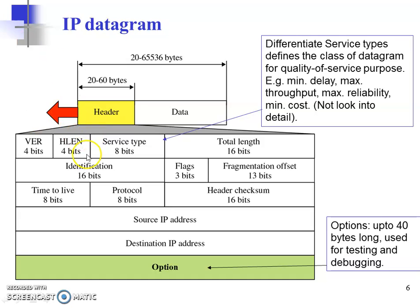The header length field consists of 4 bits. The minimum number it can have is 5 and the maximum is 15. 5 into 4 is 20 and 15 into 4 is 60 — that is how we get the header length range of 20 to 60 bytes. We will be doing some problems related to all these fields later, but let's first finish understanding the datagram structure.